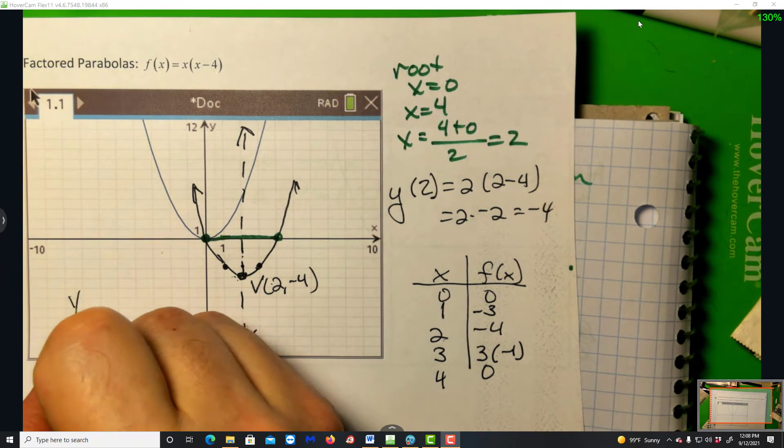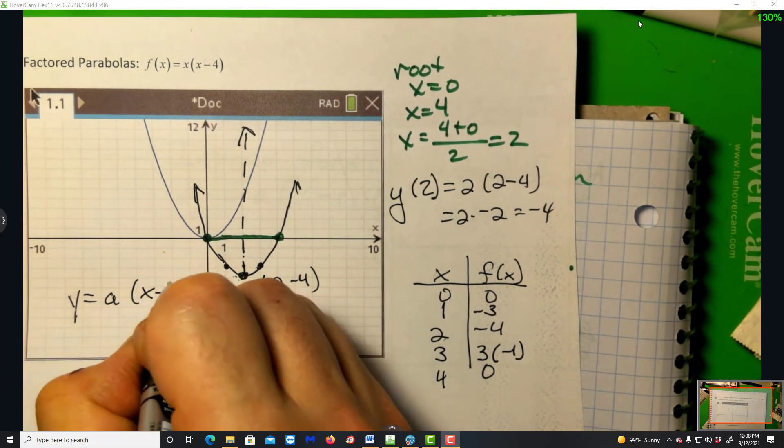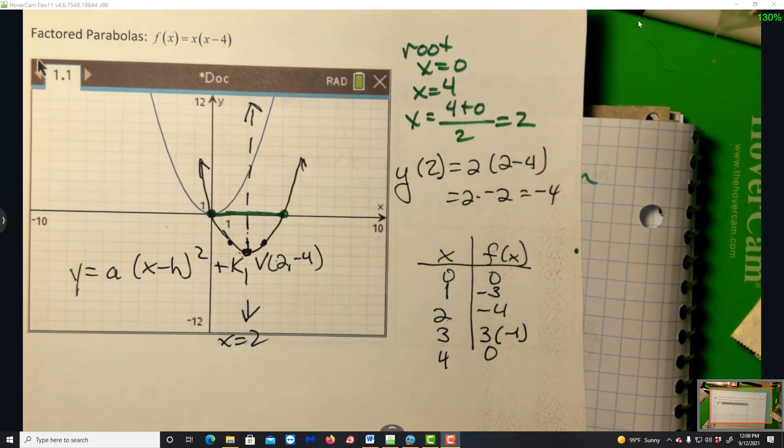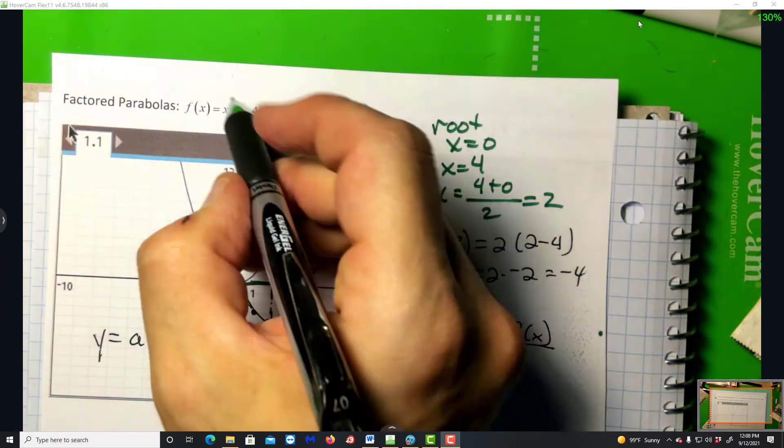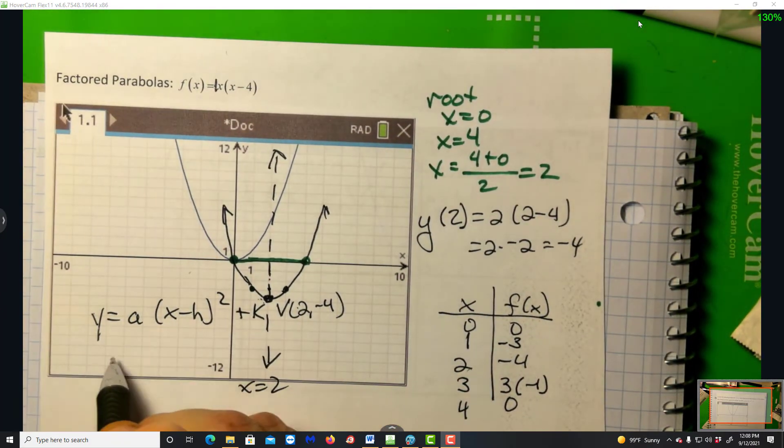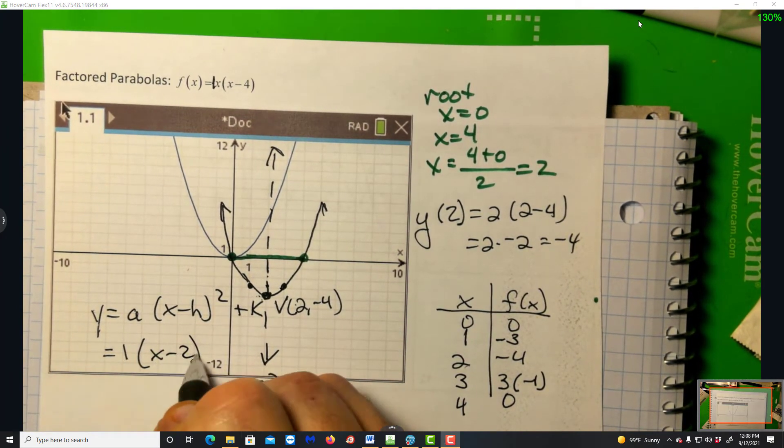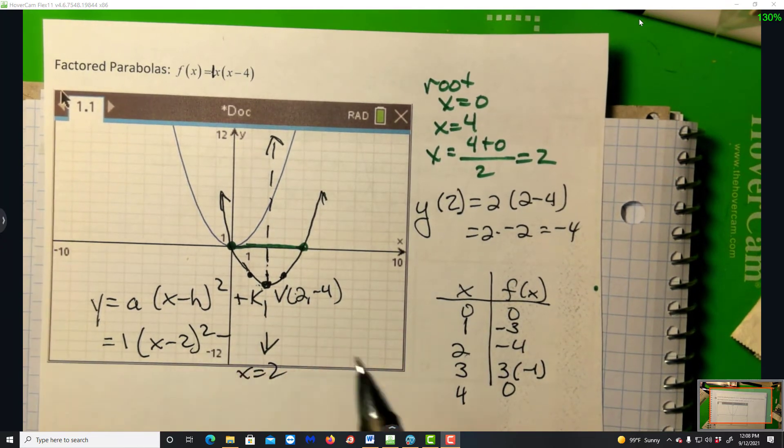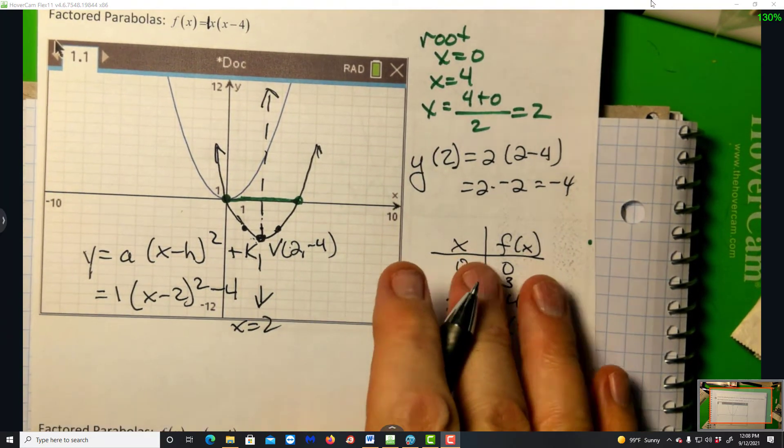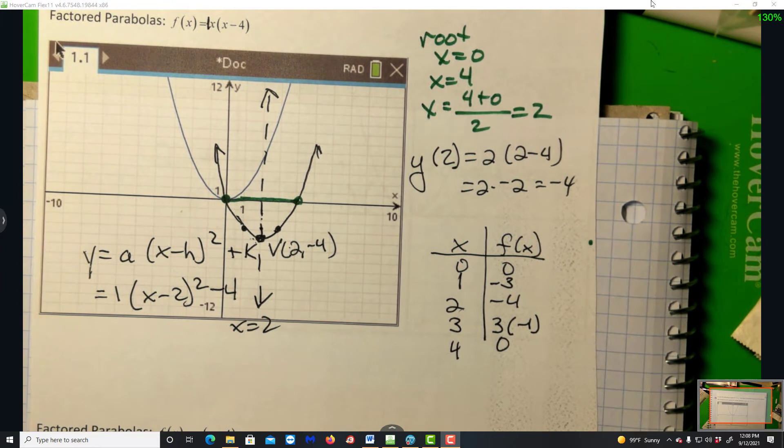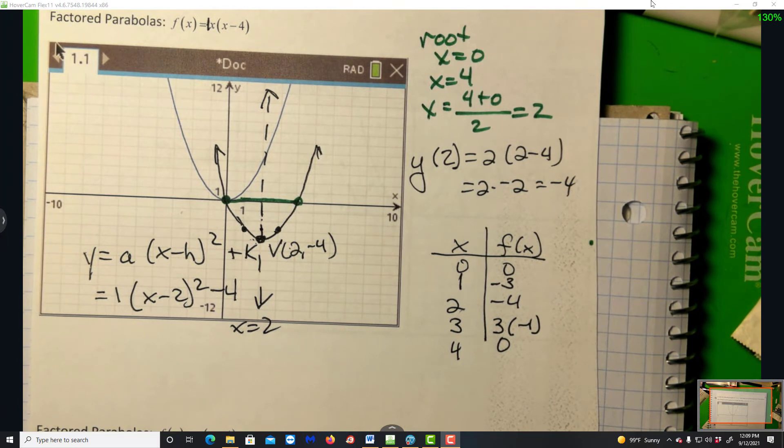So we know that in vertex form, this is x minus h quantity squared plus k. Now in our case, we have a 1 right there. So a is 1. H is the x-coordinate of the vertex. And we know we go down 4. So k is negative 4. Now I could ask you, tell me the transformations of y equals x squared used to obtain f of x. Well, f of x is y equals x squared, translated 2 right and 4 down. Done.